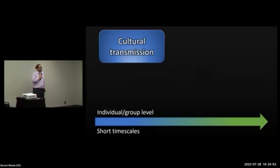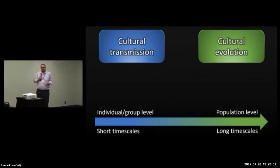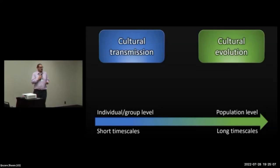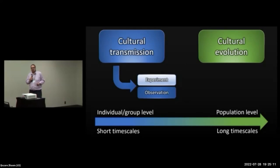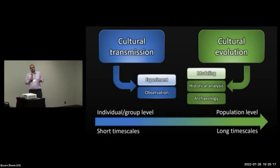One thing to note is that whereas cultural transmission happens at the individual and group level over short time scales, cultural evolution happens at the population level over long time scales. This has implications for how we study each of these phenomena. In the case of cultural transmission, it's rather easy to do experiments, whereas if we want to reason about cumulative cultural evolution, we often have to turn to other methods — namely, theoretical modeling.